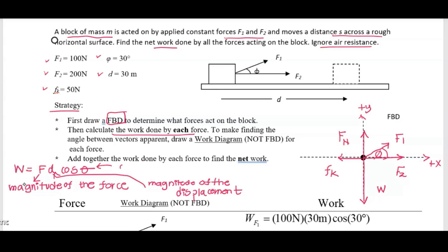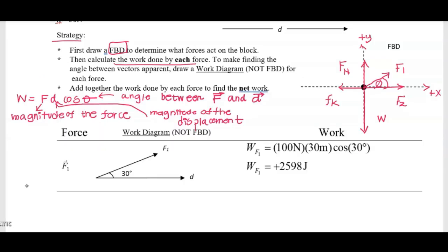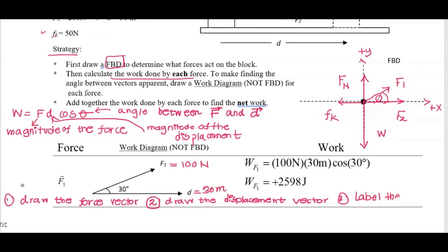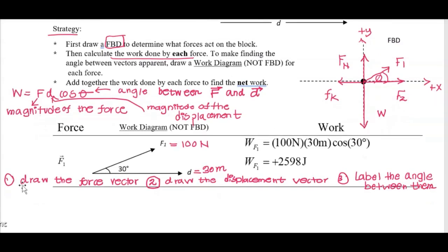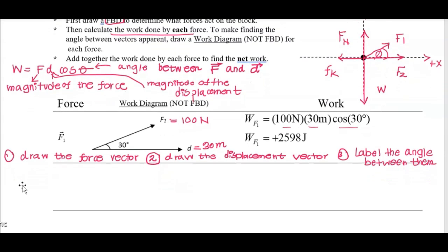The next step is to draw a work diagram. You draw the force vector and then the displacement vector so that their tails touch, then label the angle between them. For the first force F1, the work diagram is already drawn. F1 is equal to 100 newtons and displacement is 30 meters. So work equals 100 newtons times 30 meters times cosine 30 degrees, which gives 2,598 joules.